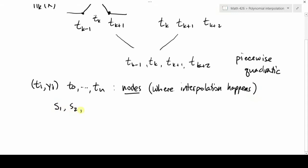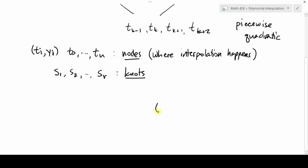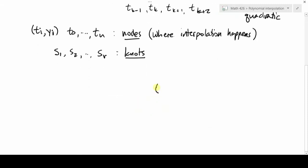But now we're going to have another sequence of points, s1, s2, up to s sub r, that are called knots. And a knot is where the definition of a piece changes. Where the pieces change. That defines the breaks between pieces, is what I mean. So we're going to need those to be different sets of points now.